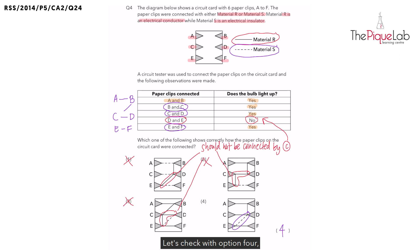Let's check with option 4 whether it matches with our working here. Yes it does. Now points B and C are indirectly connected with wires. So that confirms our answer as option 4.